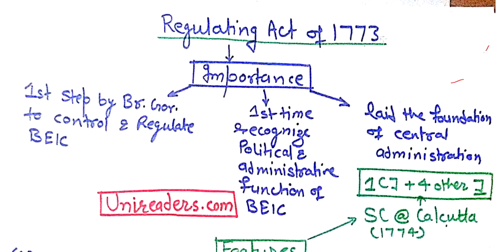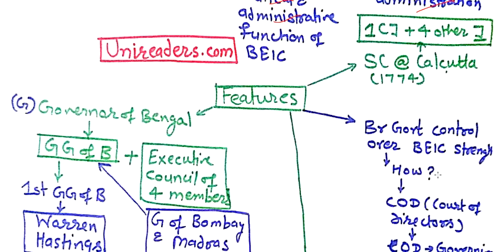Next, we move to the Regulating Act of 1773. Why is it so important? This is because it is the first step by the British government to control and regulate the British East India Company in India. It is the first time it recognized the political and administrative functions of the British East India Company and laid the foundation of central administration. A question can be asked: did the Regulating Act of 1773 lay the foundation of a federal structure or decentralized administration? No — it laid the foundation of central administration.